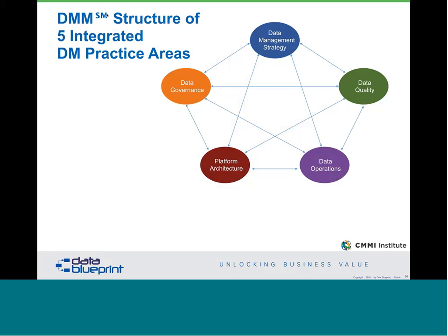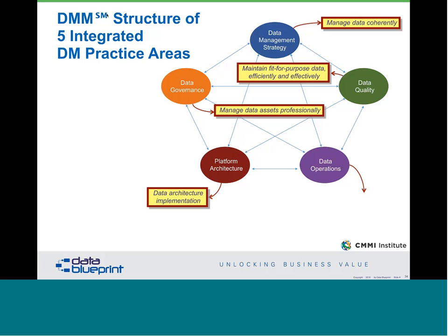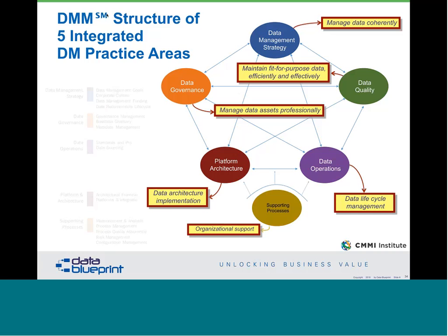It's important to understand the DMM structure of these integrated practice areas. The five areas — governance, data management strategy, data quality, data operations, and platform and architecture — form the foundation of that pyramid. From a data strategy perspective, we're going to manage data coherently, as opposed to at the work group level, and try to elevate that practice up to the organizational level. There is now a professional category of data governance professionals, and data needs to be maintained so it is fit for purpose — effective and efficient. We're never going to get to 100% correct data, so let's find out what works and is useful in that process.